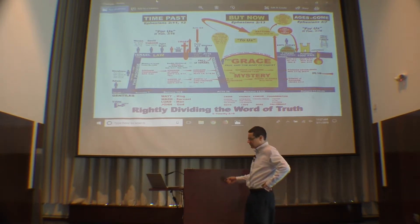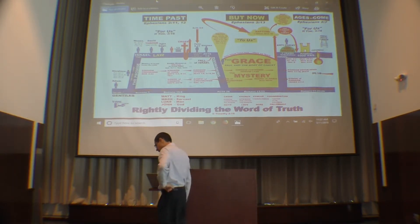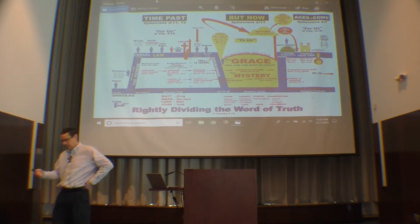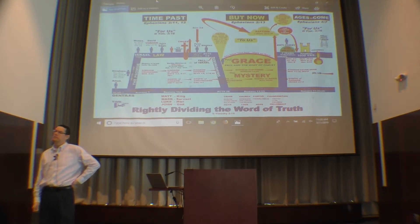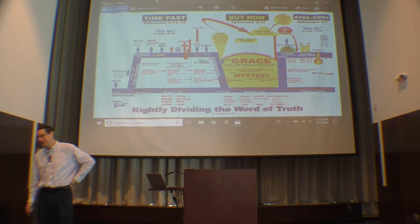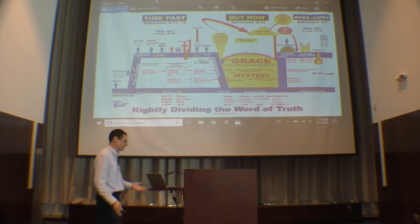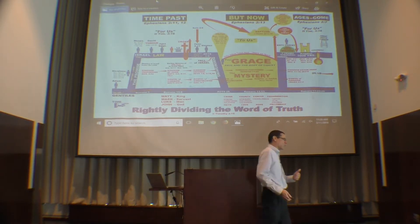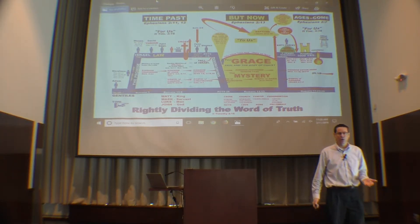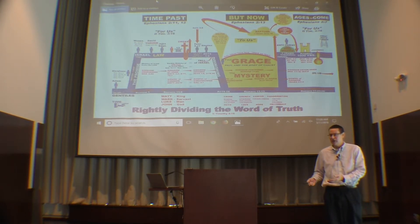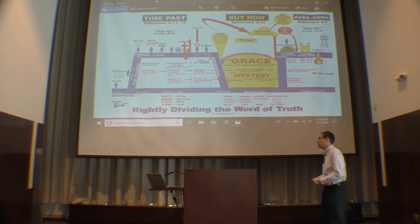So when someone says dispensationalism was invented in the 1800s, the word is in the King James Bible in 1611 — because it was in the Greek in the first century. In other words, it wasn't invented in the 1800s. It's always been there. What happened was people ignored it. It wasn't that God wasn't aware of it. It was always there, but people often just ignore God's word.